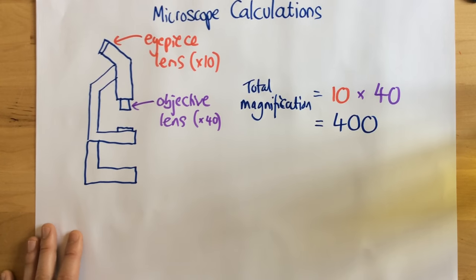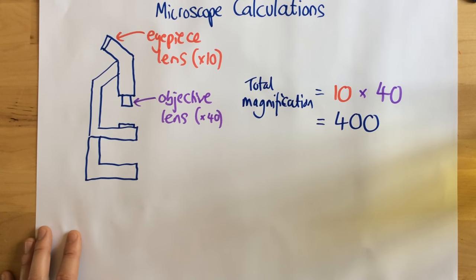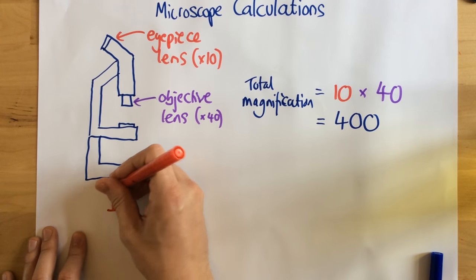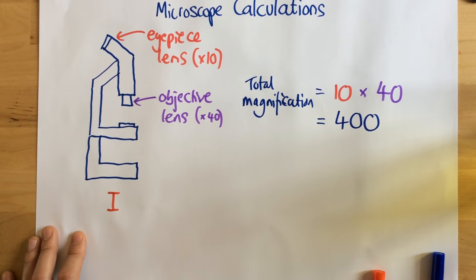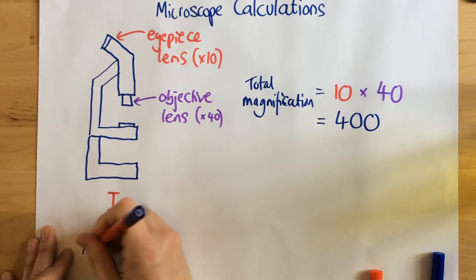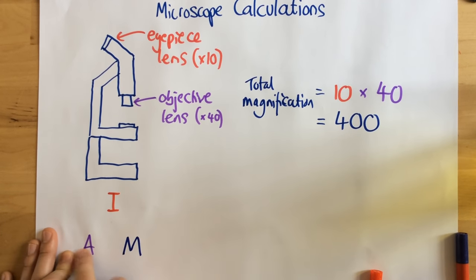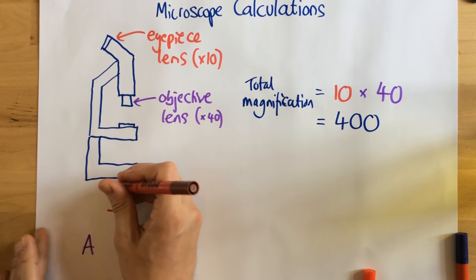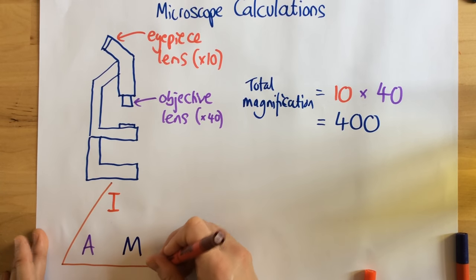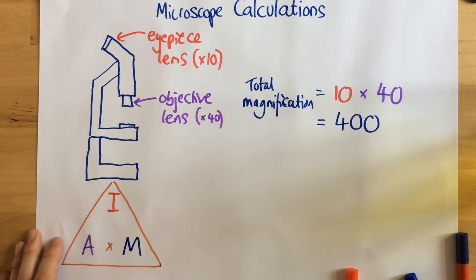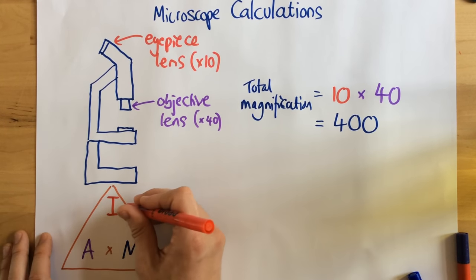Really, really simple. Now, the next part of microscope calculations that we need to know is this particular equation triangle. Now, it's nice and easy to remember it because we can just remember this: I am. I am. I goes on top and AM across the bottom. So we just read it from the top, I am.